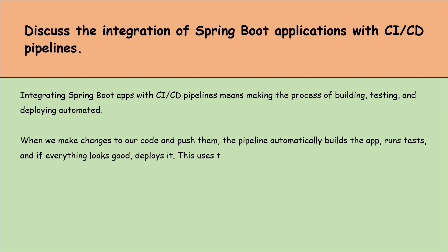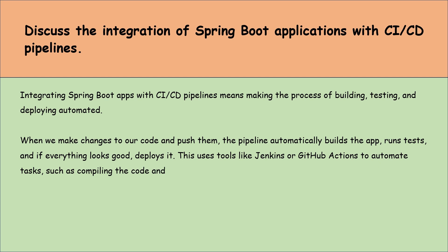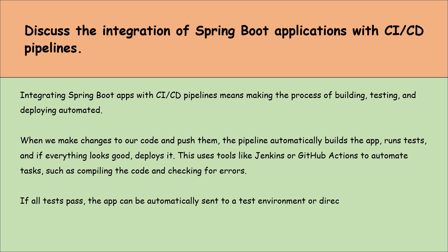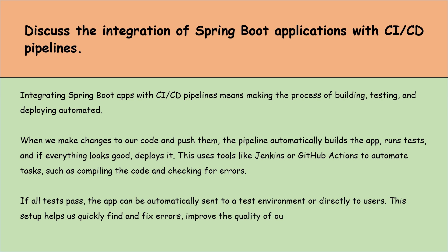This uses tools like Jenkins or GitHub Actions to automate tasks such as compiling the code and checking for errors. If all tests pass, the app can be automatically sent to a test environment or directly to users. These setups help us quickly find and fix errors, improve the quality of our app and make updates faster without manual steps.